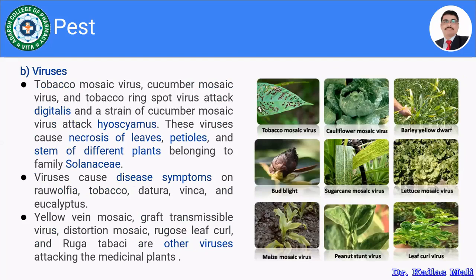Let us move towards the second type, which is viruses. Examples include tobacco mosaic virus, cauliflower mosaic virus, barley yellow crop, bird blight, sugarcane mosaic virus, luteci mosaic virus, maize mosaic virus, peanut stunt virus, and leaf squirrel viruses. There are many other viruses which also infect medicinal plants as well as crops grown in the farm.